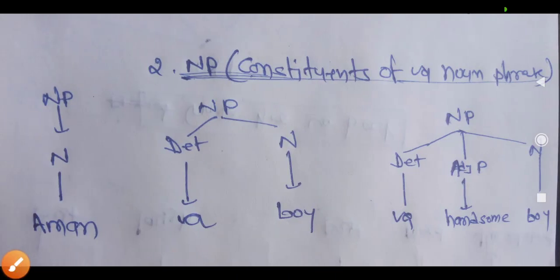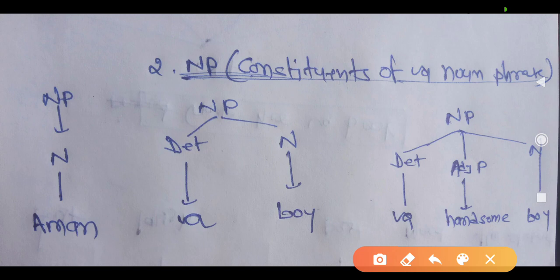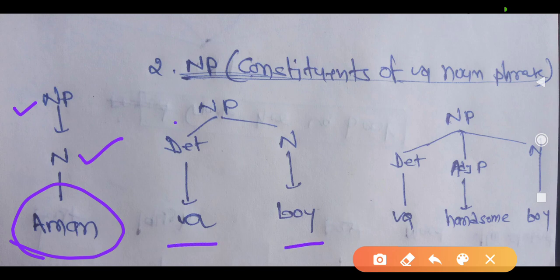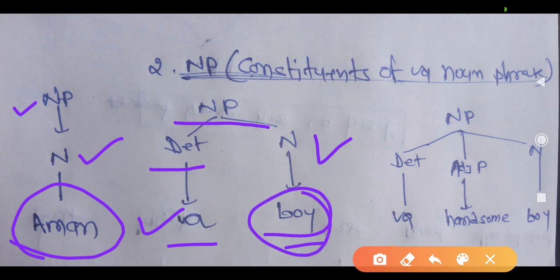When you talk about a noun phrase, let's discuss. A noun phrase — the head of the noun phrase is noun, that you need to keep in your mind. When you see a noun phrase, there has to be a noun. Noun could be a thing, place or animal — it could be anything. For example, in 'a boy,' the noun phrase has a determiner — that is 'a' — and a noun, 'boy.'